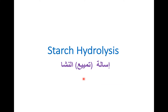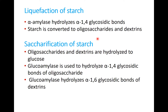Hello everyone. Today I'm going to talk about starch hydrolysis. In Arabic, this is called إسالة أو تمييع النشا. This is an important process for converting starch to simple sugars, which are used by yeast to produce ethanol. Today I'm going to start with converting the starch to simple sugars, especially glucose, that is the feedstock for production of ethanol using the yeast. I'm going to explain in English and then explain in Arabic in a little more detail.